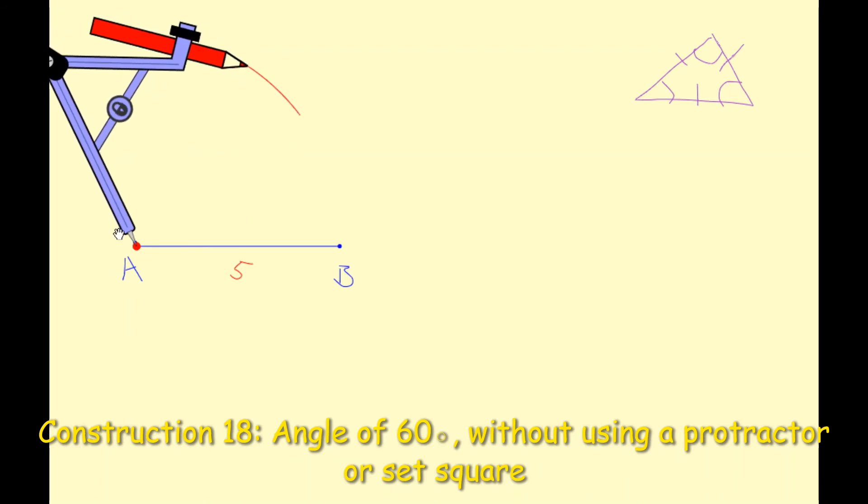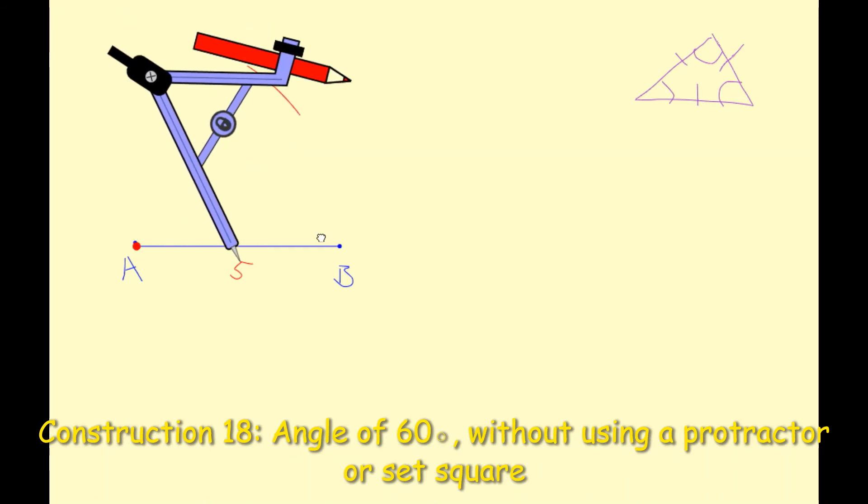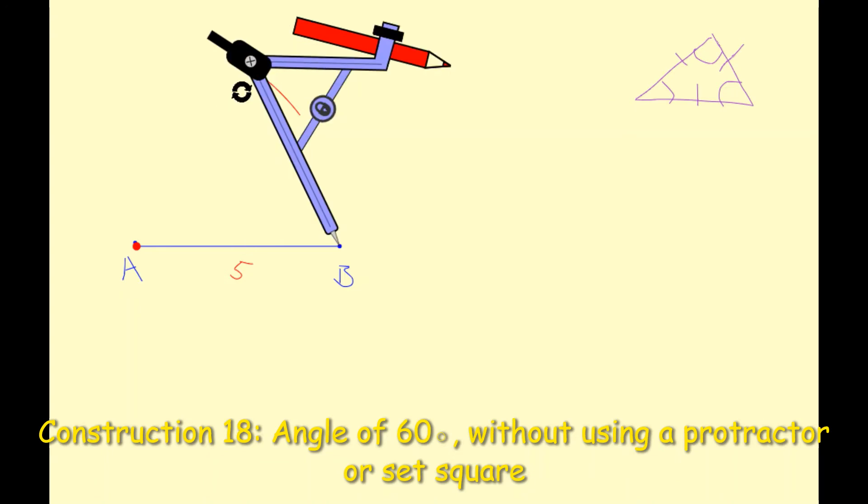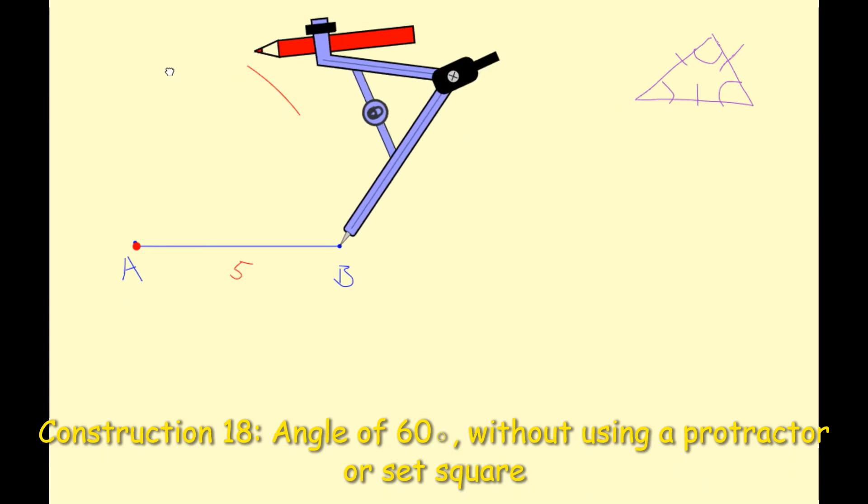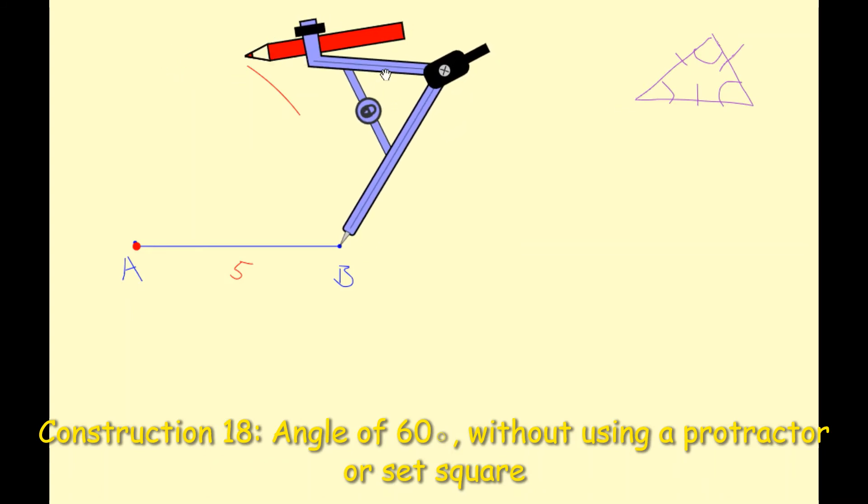I think that should be enough and then I'm going to move my needle over to B and I'm going to do the same, and hopefully the two arcs will intersect each other. So it looks like I just have to move my other arc ever so slightly.